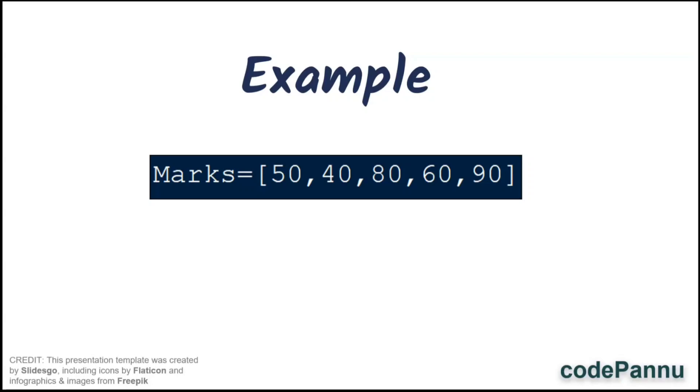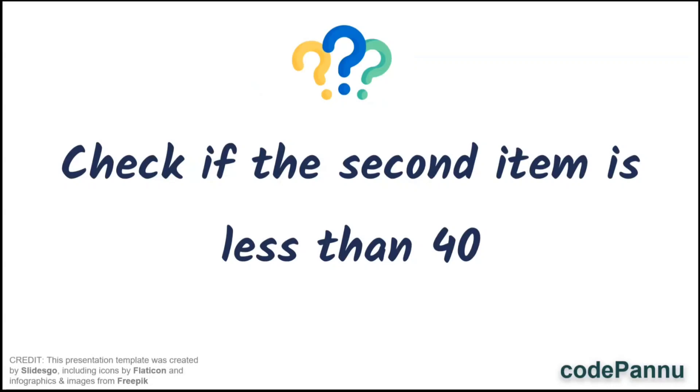Now, can you check if the second item in the list marks is less than 40?